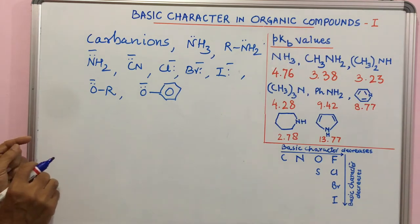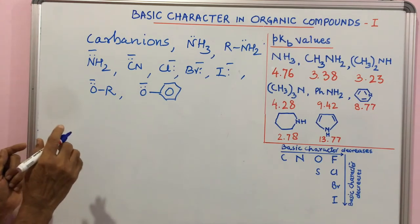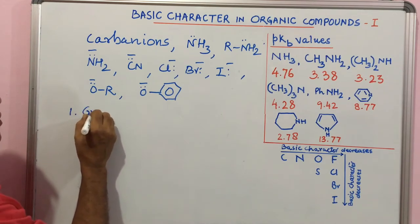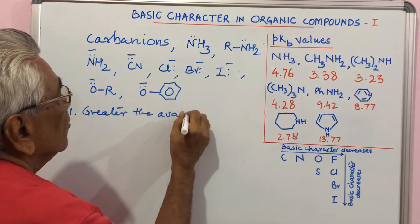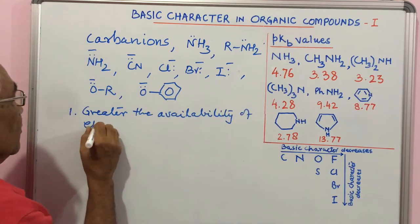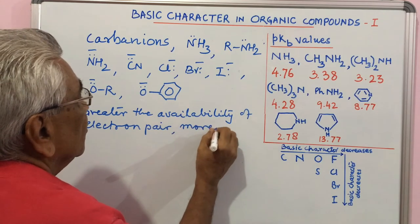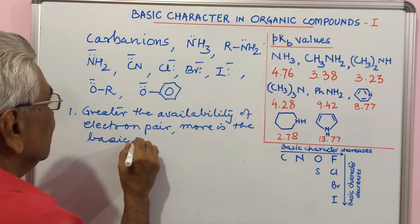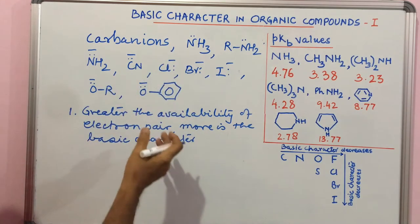Now we will see which of these is more basic, which is lesser. Two points are to be noted here. Number one: greater the availability of electron pair, more is the basic character. Factors which inhibit the availability of this electron pair make it less basic, which help will make it more basic.